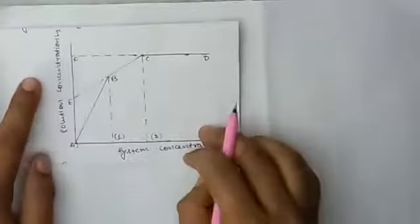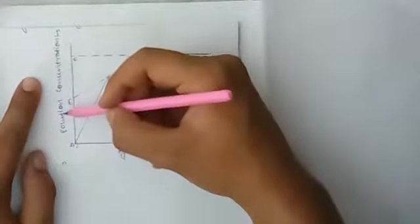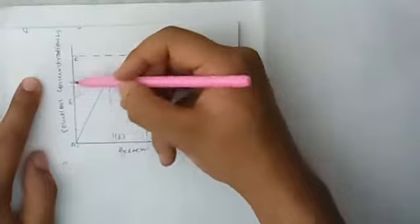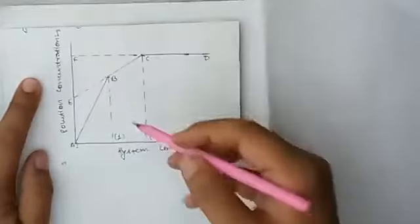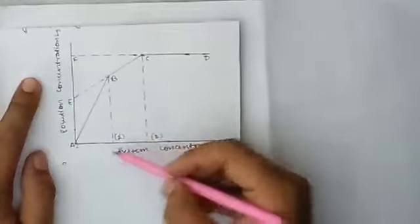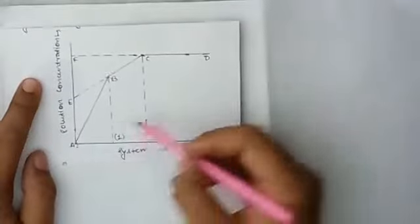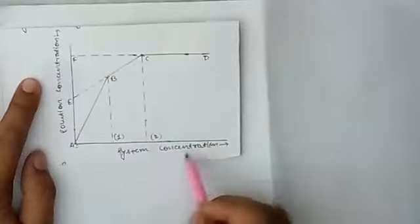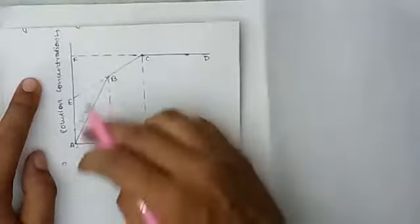In this diagram, the y-axis represents solution concentration and the x-axis represents system concentration. There are two segments: the AB segment and the BC segment.